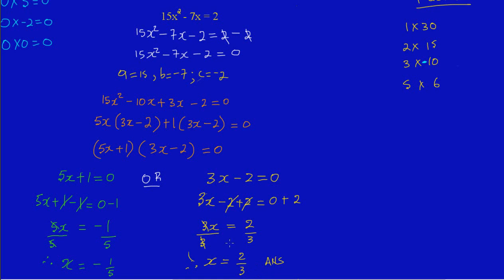So x has two values: x can either be negative one-fifth or positive two-thirds — and it's that easy. Feel free to subscribe to this channel to get the latest updates on our videos, leave a comment or a question and we'll get back to you as soon as possible. Thank you.